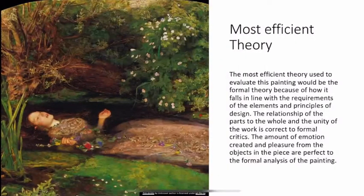The most efficient theory used to evaluate this painting would be the formal theory because of how it falls in line with the requirements of the elements and principles of design. The relationship of the parts to the whole and the unity of the work is correct to formal critics. The amount of emotion created and pleasure from the objects in the piece are perfect to the formal analysis of the painting.